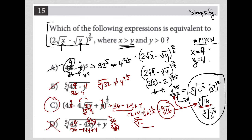Hopefully you can see why choice C is correct and how the plug-in-your-own-number strategy works. I chose x=9 and y=4 because I wanted perfect squares under the radicals, and because x must be greater than y. You could choose different numbers — like x=16 and y=9 — and you'd get the exact same answer, which shows how powerful this strategy is.